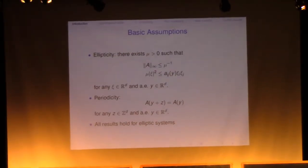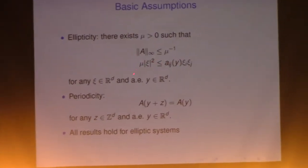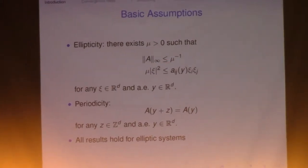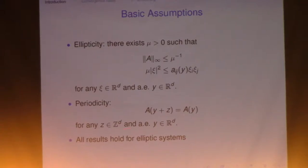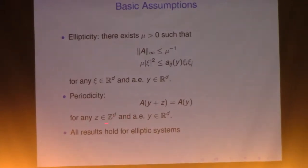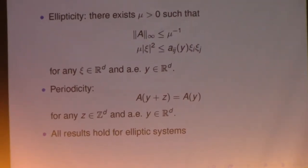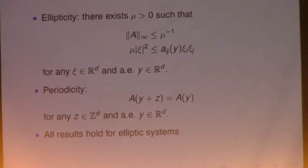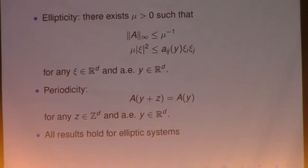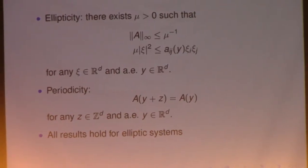Here are the precise assumptions. Ellipticity means the matrix is positive definite with positive lambda and mu, and also bounded above by mu to the negative one. Periodicity with respect to the integer lattice means if you put a z here with integer coordinates, you have the same matrix. All the results we will talk about in this lecture hold for elliptic systems. Although you do not see the upper indices — that's just for simplicity — the same proof carries over directly to systems of elliptic equations.